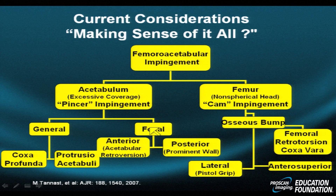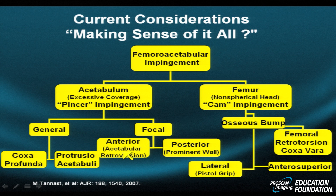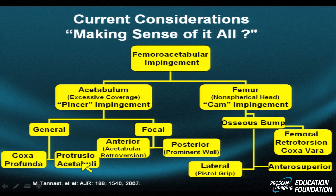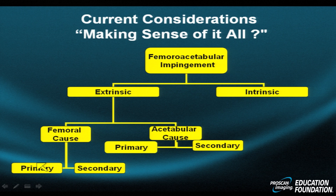In pincer type impingement, it can be generalized or focal. If focal, one wall may be overdeveloped — for instance, if it's the anterior wall of the acetabulum, the femoral head is pushed backwards, a condition called acetabular retroversion. If the posterior wall is too prominent or too deep, it may rotate the head forward, known as anteversion. In general forms of pincer type impingement, one may see a cup that's too deep — protrusio acetabuli with over-coverage, or coxa profunda.